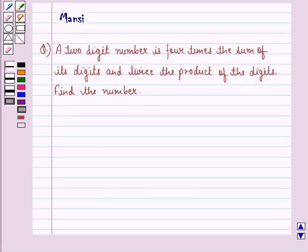Hi and welcome to the session. Let's work out the following question. A two-digit number is four times the sum of its digits and twice the product of the digits. Find the number.